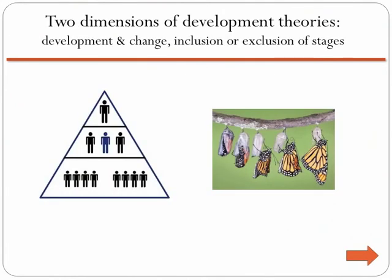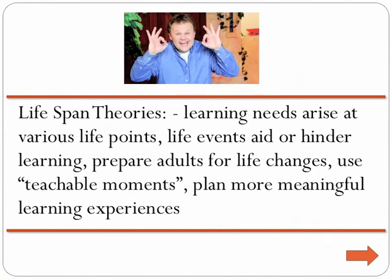According to Bee, development theories vary only in two dimensions. The first involves development and change: development theories imply a hierarchical ordering of development sequences, and change theories are descriptive of changes typically experienced by adults. The second variance revolves around the inclusion or exclusion of stages, where stage theories imply fixed, sequentially occurring stages. The core contribution that lifespan development theories make is in clarifying and refining adult readiness to learn. Adults are most ready to learn when the learning meets an immediate life need and are most motivated when it fills an internal need.